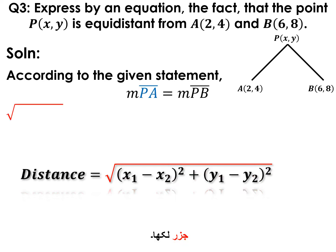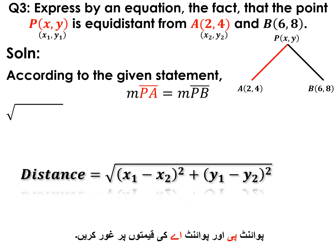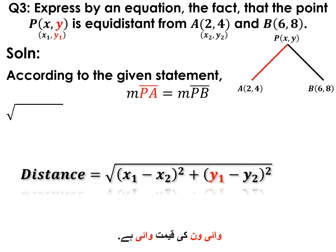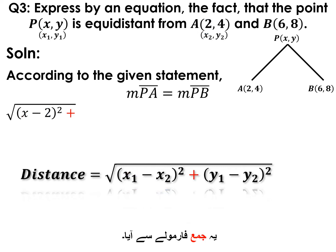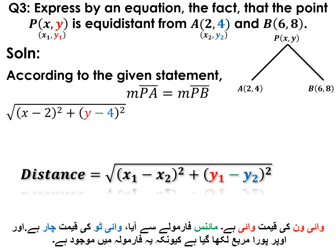Consider the values of point P and point A. Here x₁ = x, y₁ = y, x₂ = 2, and y₂ = 4. Applying the formula, we get √[(x − 2)² + (y − 4)²] on the left-hand side.